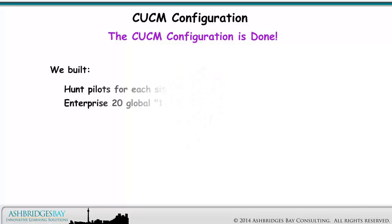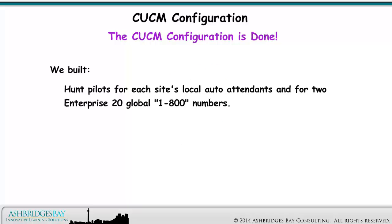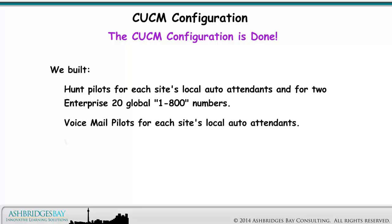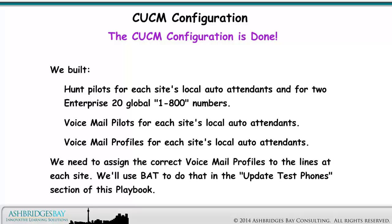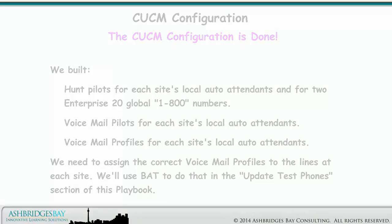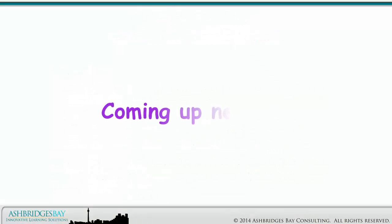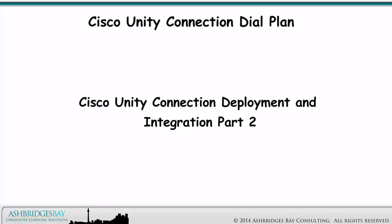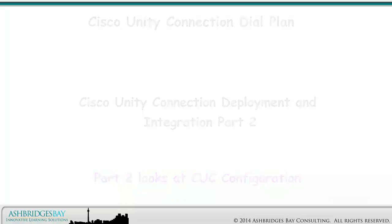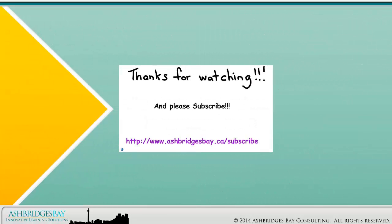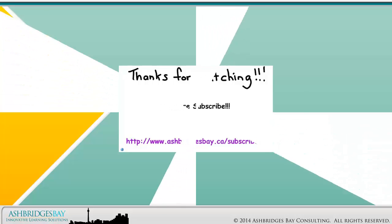We built HuntPilots for each site's local auto-attendants and for two Enterprise 20 Global 1800 numbers, Voicemail Pilots for each site's local auto-attendants, and Voicemail Profiles for each site's local auto-attendants. We need to assign the correct voicemail profiles to the lines at each site. We'll use BAT to do that in the Update Test Phones section of this playbook. Part 2 looks at CUC configuration.